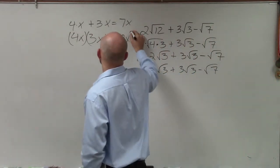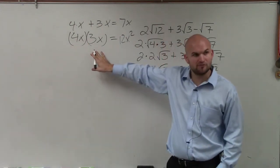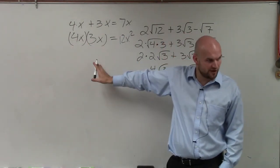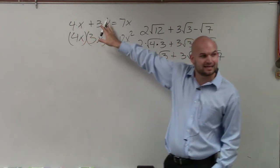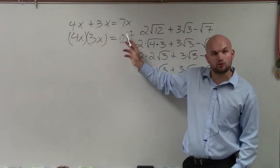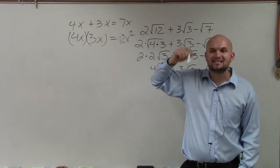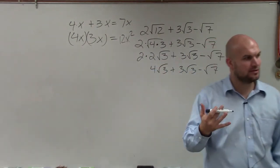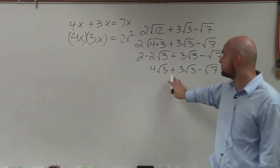What that means is we multiply our two coefficients and we multiply our two variables, all right? However, when we're adding and subtracting, we just add our coefficients and the variable remains the same. That is the exact same rules that we need to apply with radicals.